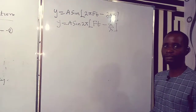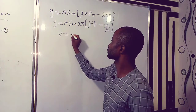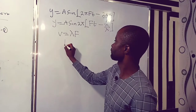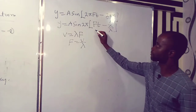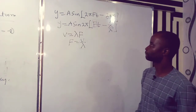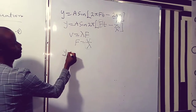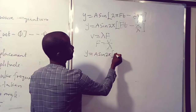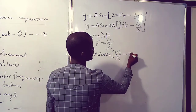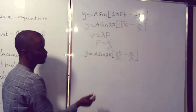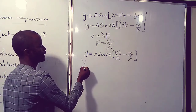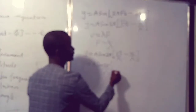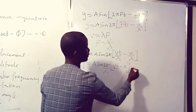Now, recall that under the wave equations, V is equal to lambda times f, that is wavelength multiplied by frequency. Now make f the subject of the equation. Therefore we have f equal to V over lambda. Go back to this equation, remove f, and substitute this value. Therefore we have y equal to A sine 2π times Vt over lambda minus x over lambda. Also, 1 over lambda is the common factor of the equation. Therefore y equals A sine 2π over lambda, multiplied by the bracket Vt minus x.